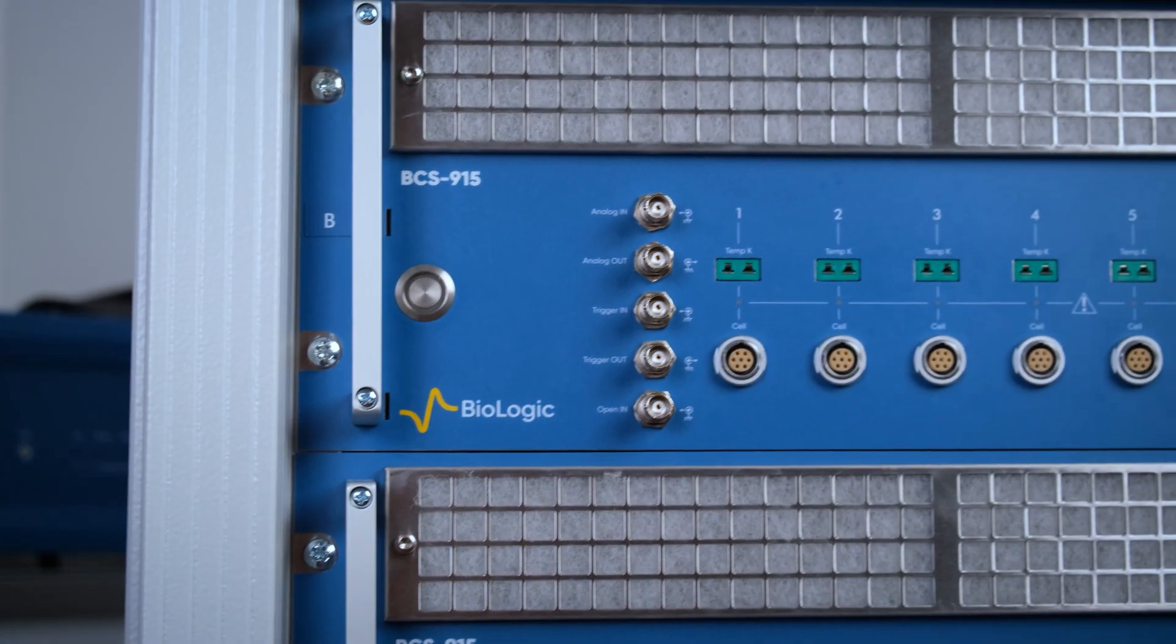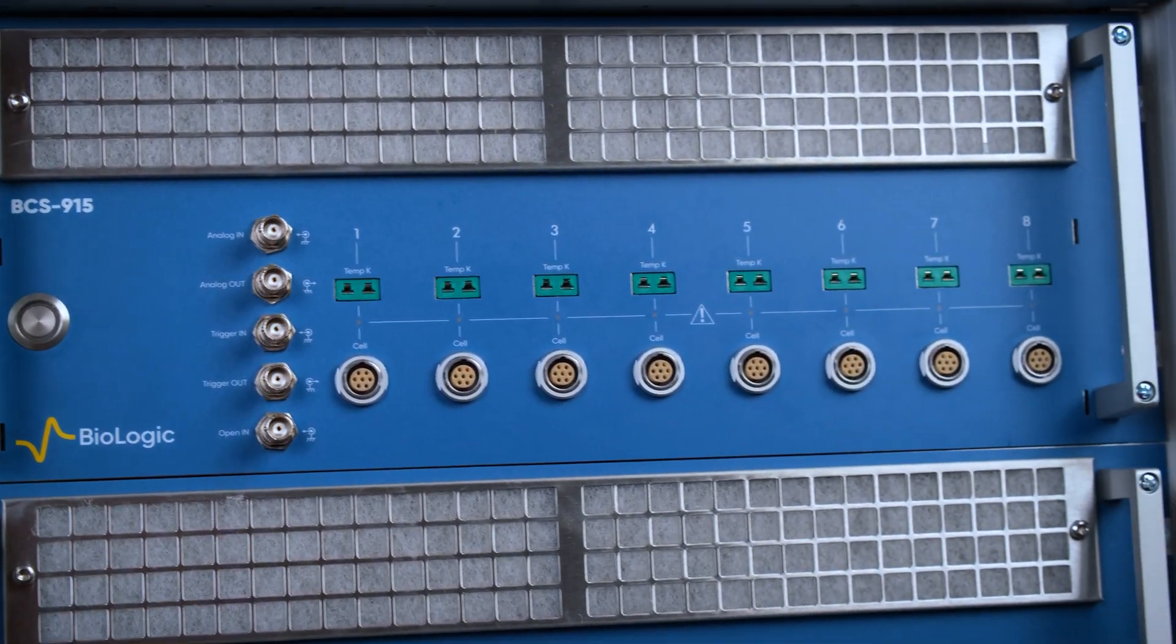Battery cyclers need to be able to capture subtle changes in battery measurements early on using precise, accurate, and high-resolution measurements in order to identify potential problems early on and optimize battery performance from the beginning.